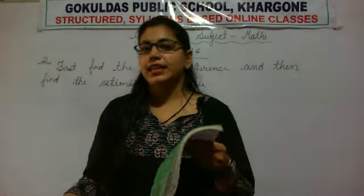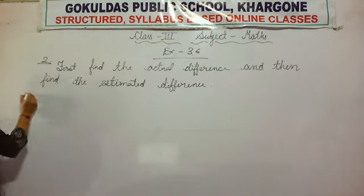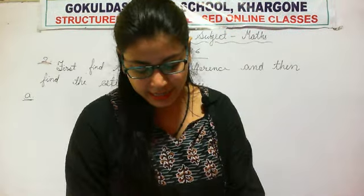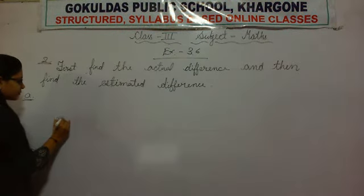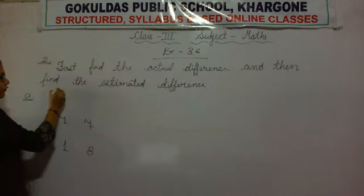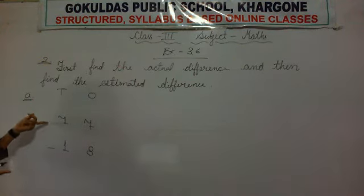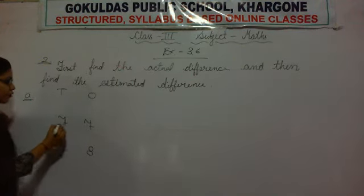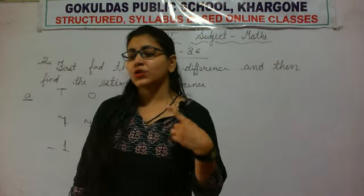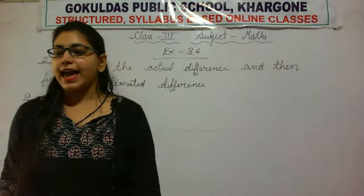First of all we will find the actual difference, then we will find the estimated difference. So let's start solving part A. 77 minus 18. Since two-digit numbers are there — 77 and 18, both having two digits — we will write two places, that is tens and ones.